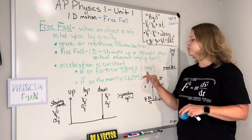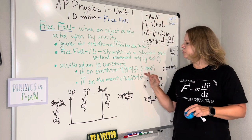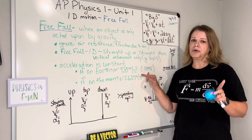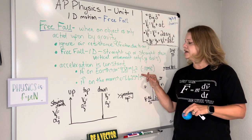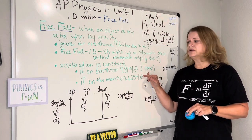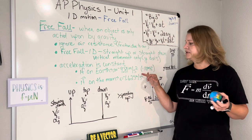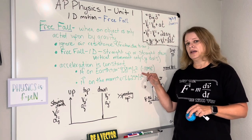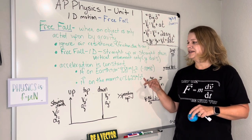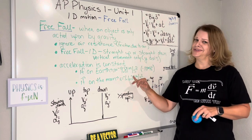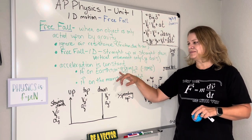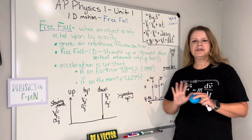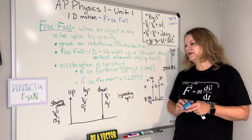It's worth noting that the AP board will allow you to use negative 10 meters per second squared, which makes the problems faster and the math easier. I have my students practice with negative 10 in April leading up to the exam. But the engineer in me loves sig figs, so I like them to use negative 9.81 for most of the school year. Either one is fine — it's up to your teacher.